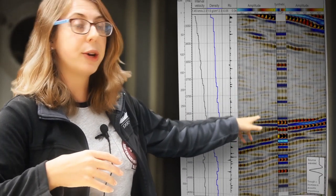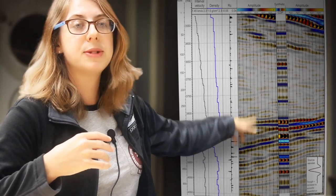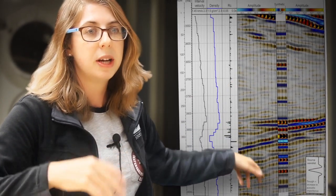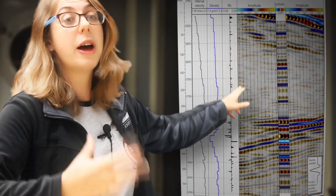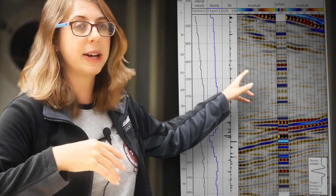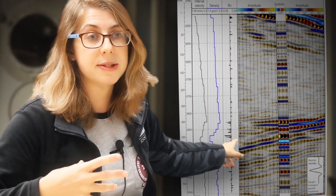The reflections, the echoes that come from deeper come at later times so we see them further down the seismic section. So these seismic sections are great but they're actually telling us about the time it takes these reflections to come back. So although this looks like a cross section the y-axis is in time not meters.